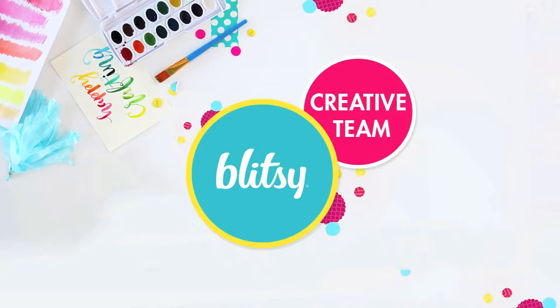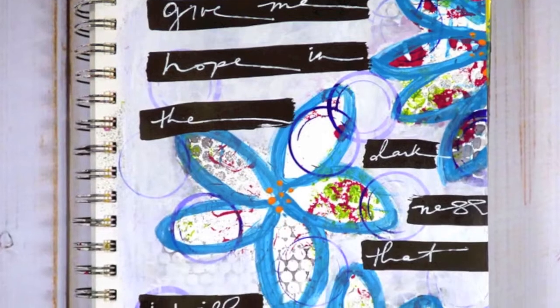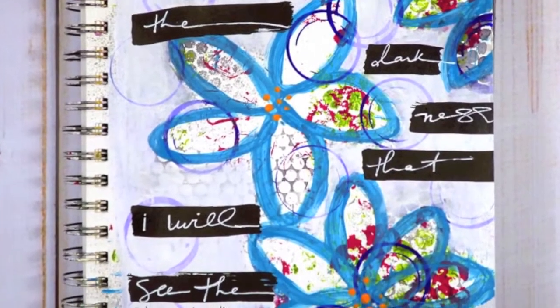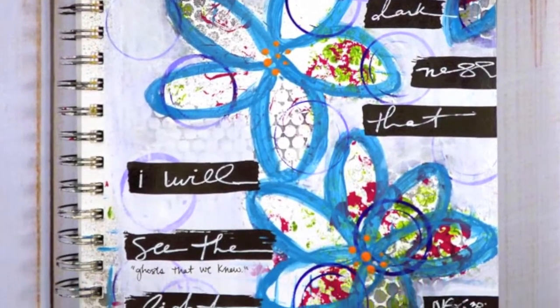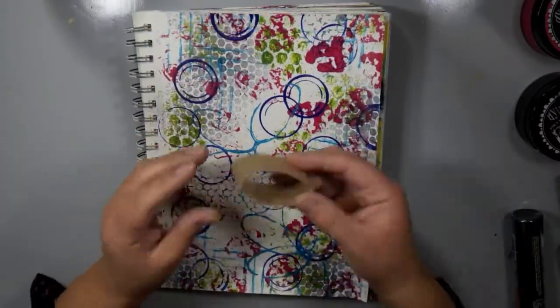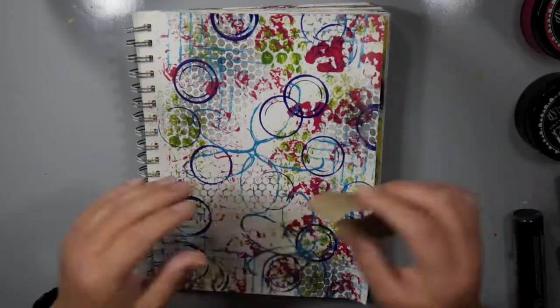And I'm going to show you how to take a really busy background in your art journal and highlight some simple shapes to tone it down and give you some areas for some journaling. So this is the background that I created.